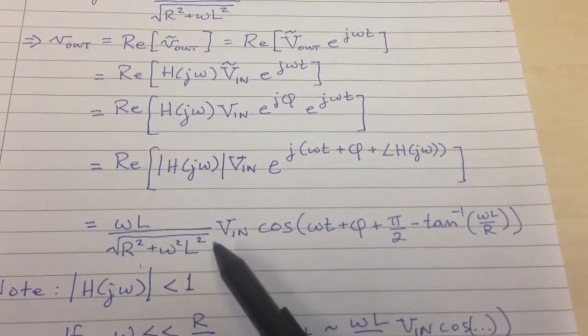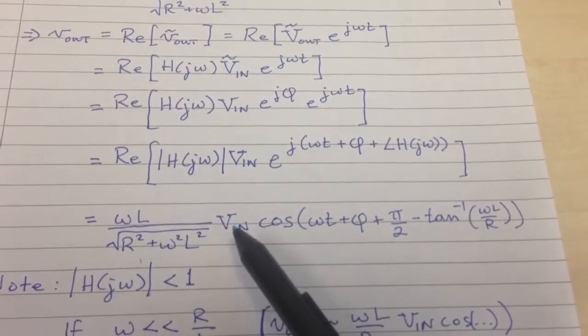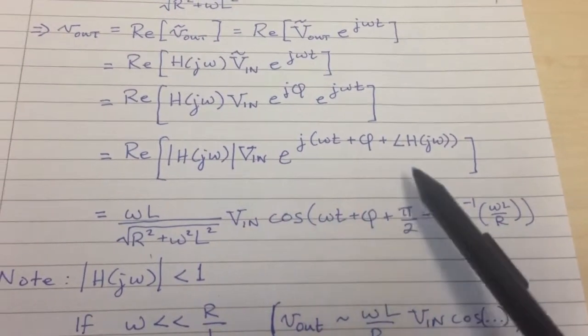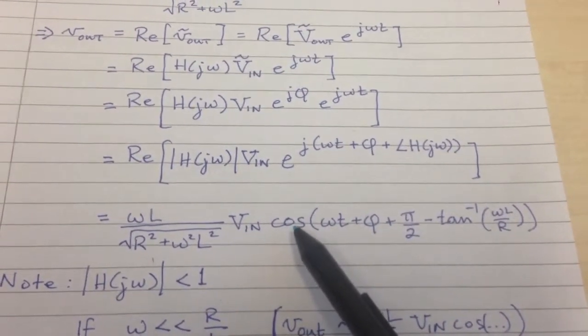So that's the answer. That's basically the real part. Notice we threw away the j sine term here from the exponential. We just are left with the cosine term.